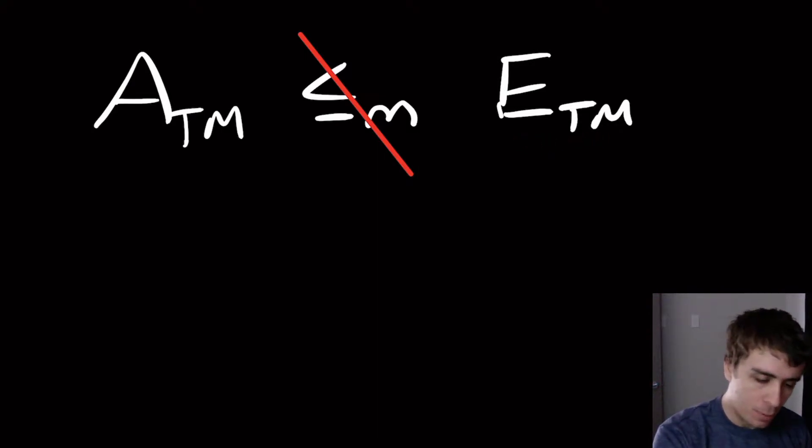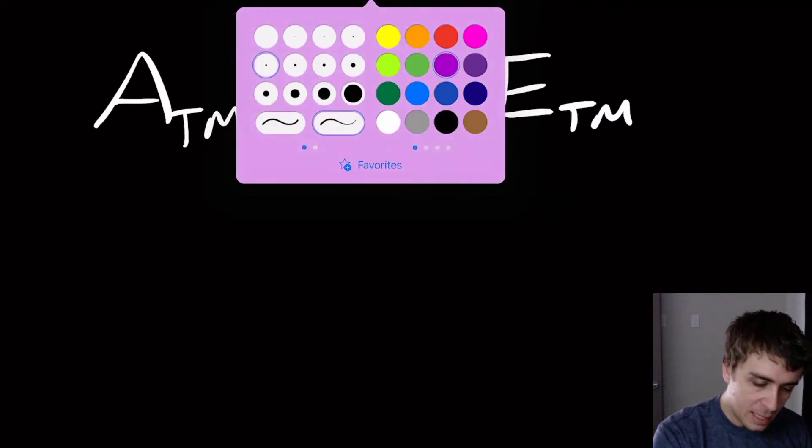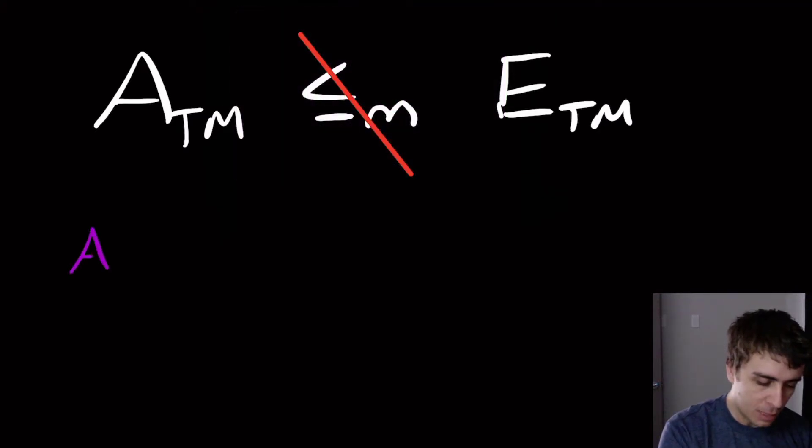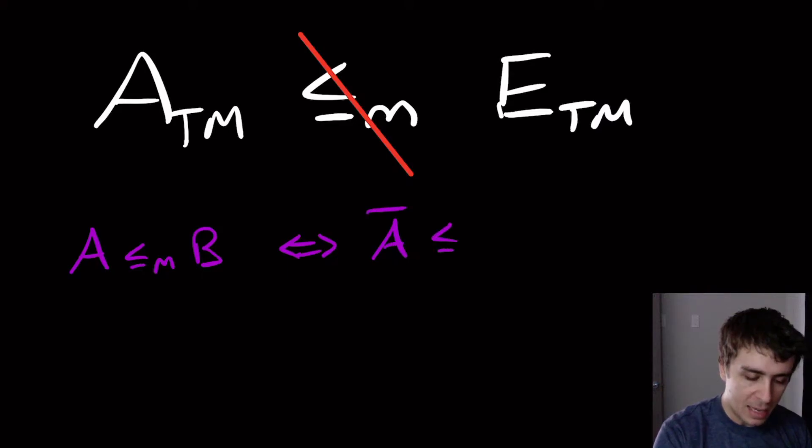And it's a very quick proof. So the idea is to note that if we have some language A which mapping reduces to B, then this is the same thing as saying that the complement of A mapping reduces to the complement of B.